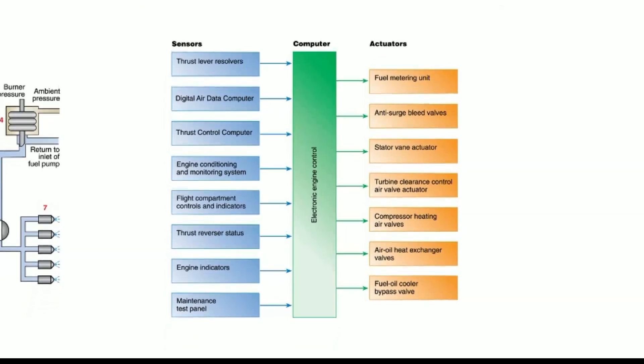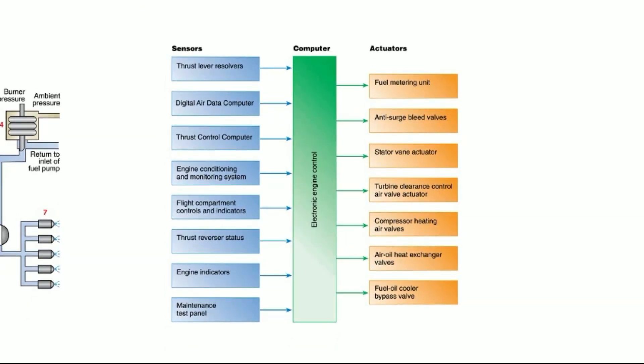Looking at data sets coming into an electronic engine control: we have thrust lever resolvers, digital air data computer, thrust control computer, and so on. It can control servos actuating all these different systems. One neat example is turbine clearance control, which regulates the temperature of the turbine wheels — controlling thermal expansion to maintain clearance between the turbine wheel and the engine case. It also provides information for operating heat exchangers, bypass valves, and other systems.